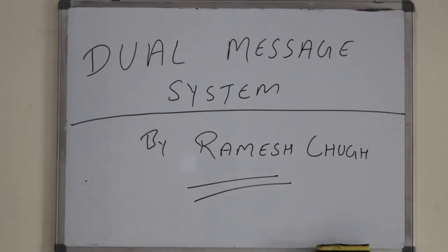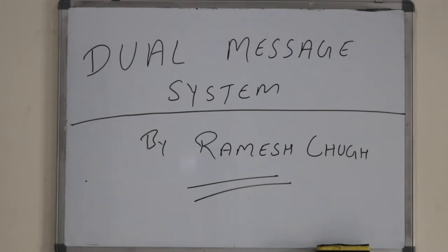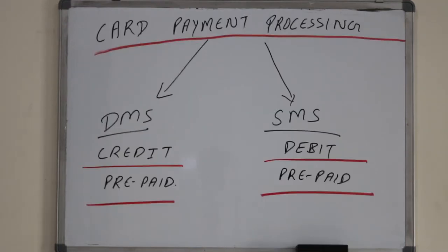Hi, this is Ramesh. In my previous sessions we have seen how a transaction is processed between a merchant and acquirer — there are two legs: authorization and reconciliation. Now we will see how the transaction is processed between an acquiring bank payment system and an issuing bank, and how the card and payment transaction is processed between these three entities as per payment scheme guidelines.